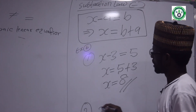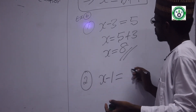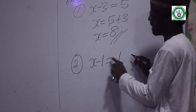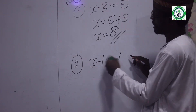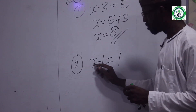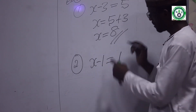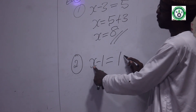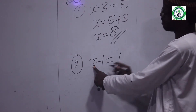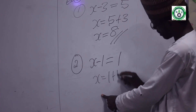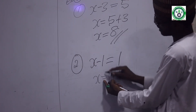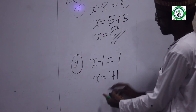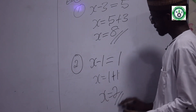Another example: x minus 1 equal to 1. A certain unknown number — when I subtract 1 from it, I get 1. To find x: minus 1 moves to the right and becomes plus 1. X equal to 1 plus 1. That gives x equal to 2.